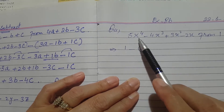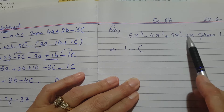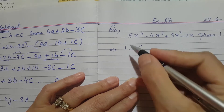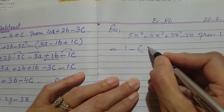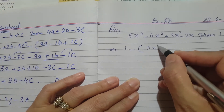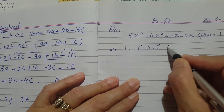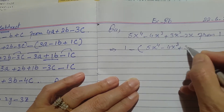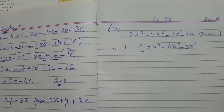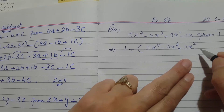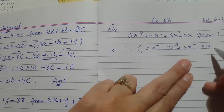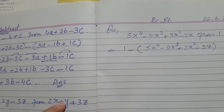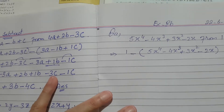We cannot add or subtract unlike terms directly, but we will subtract the whole expression from 1. So we write: 1 minus the expression, which is 5x raised to the power 4 minus 4x cube plus 3x square minus 2x, where x has the power 1.